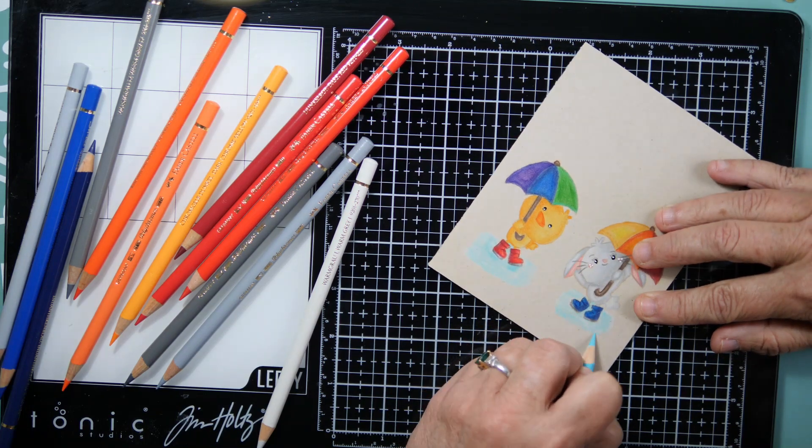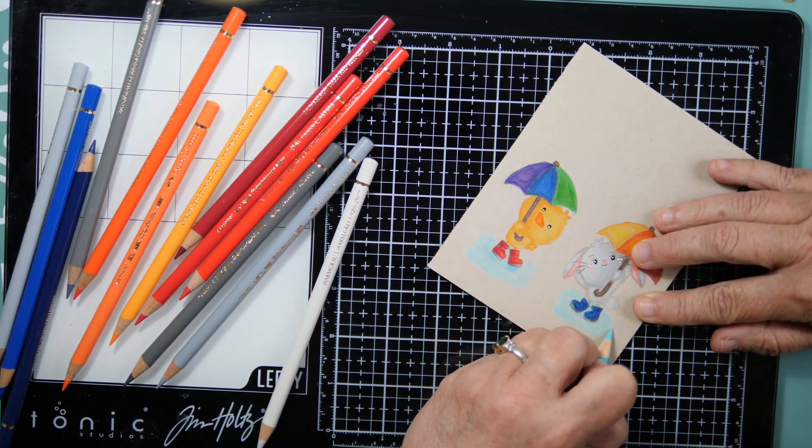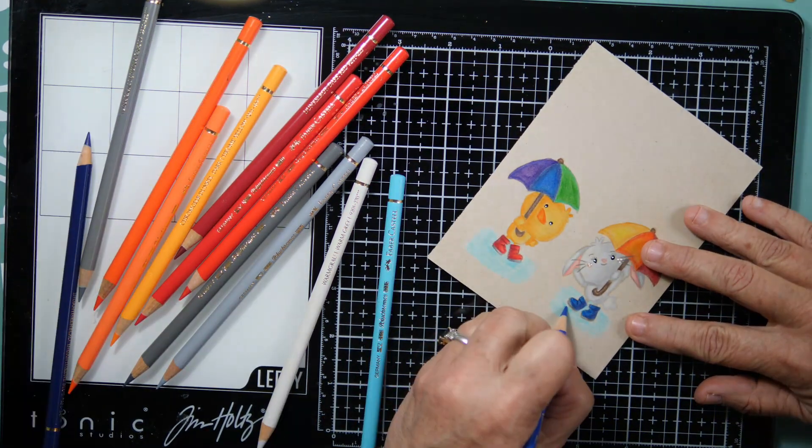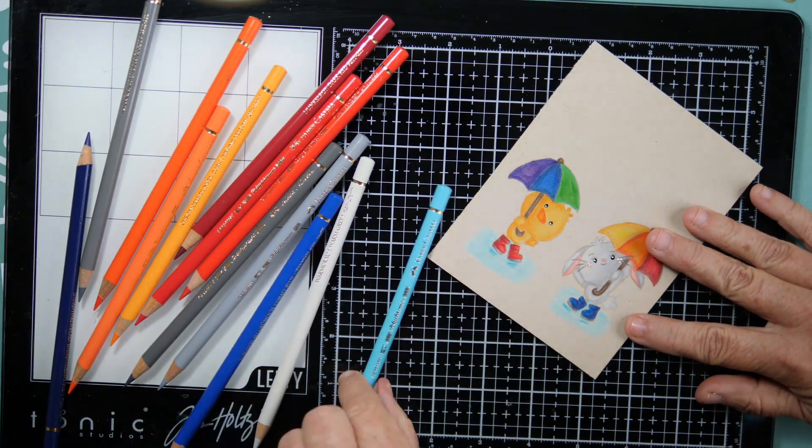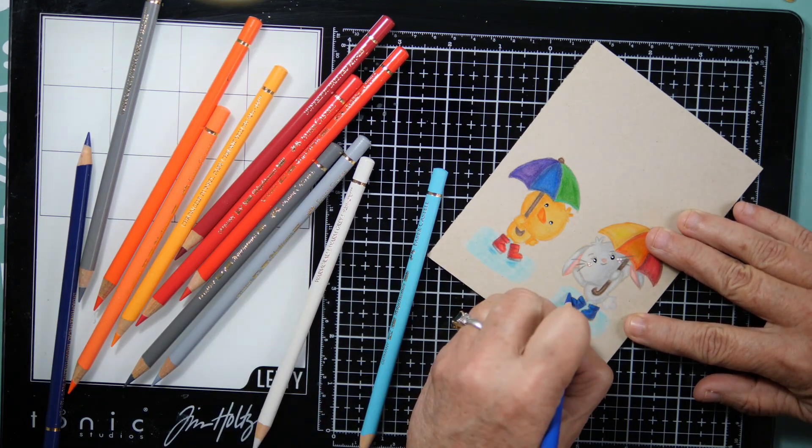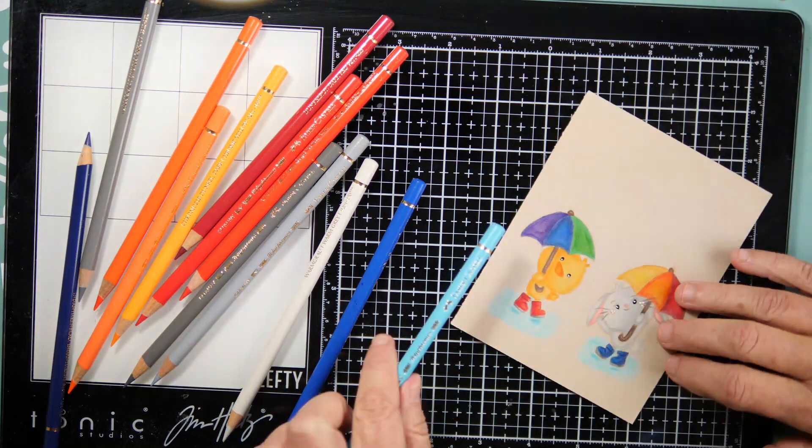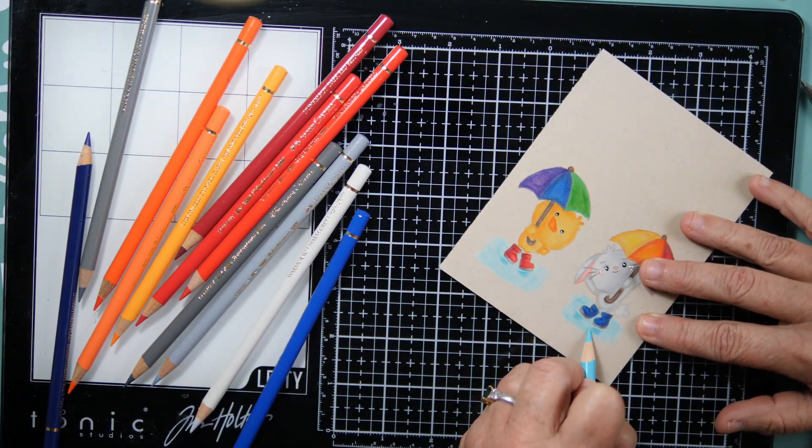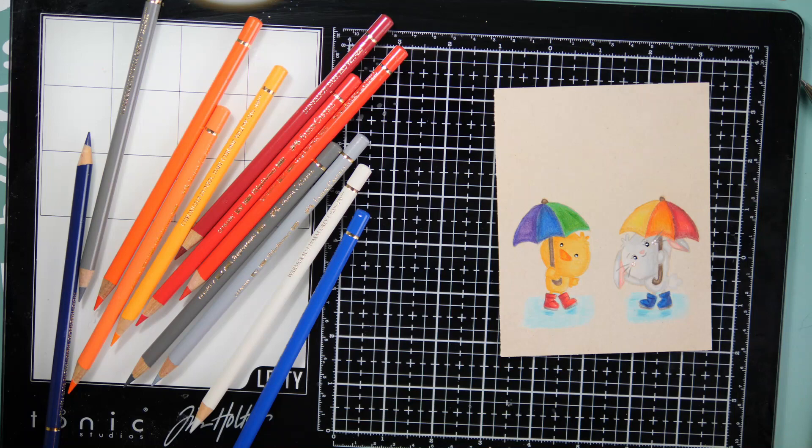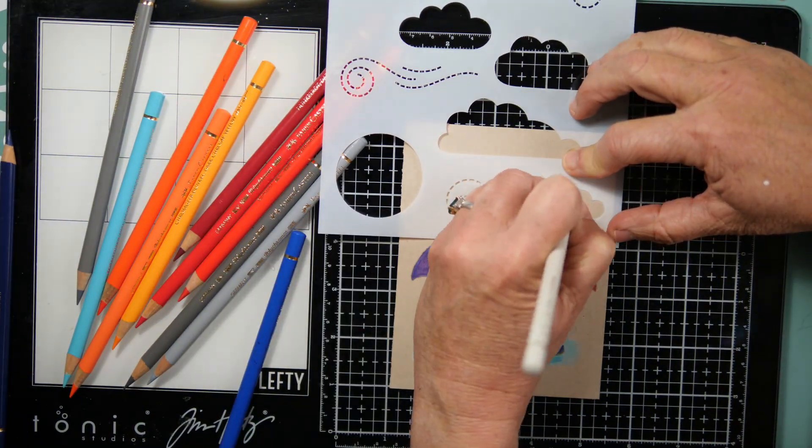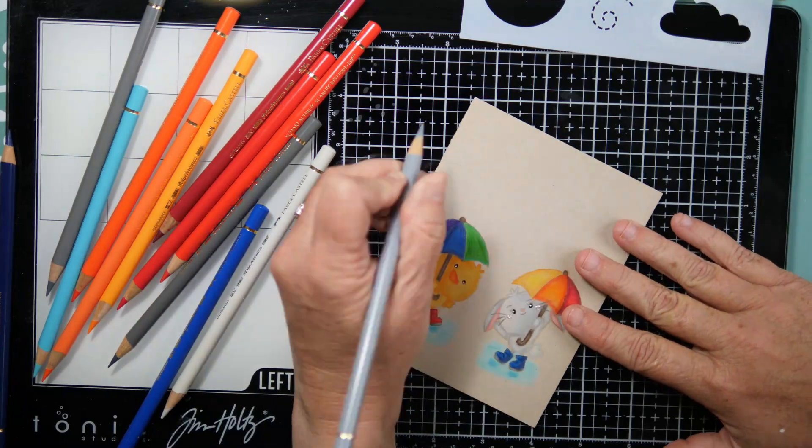I do use the Honey Bee Stamps Fall Shower stencils. I use two of them, one for the raindrops and one for the clouds. When I do the clouds, I pretty much just trace two of the clouds out and then I take a warm gray pencil and add a little bit of fluff to the edges and fill it in with a cool gray.